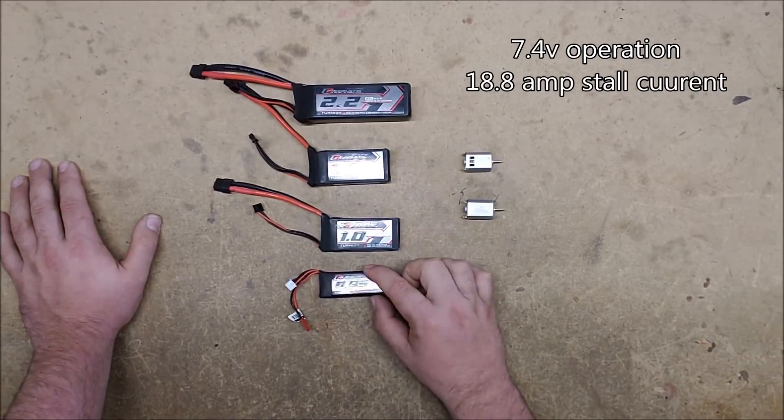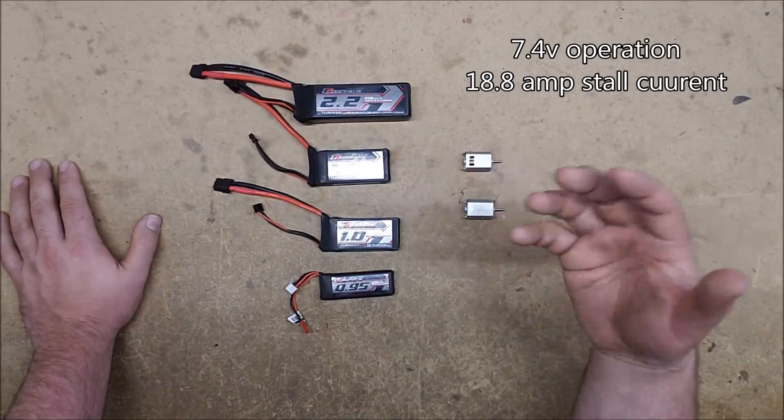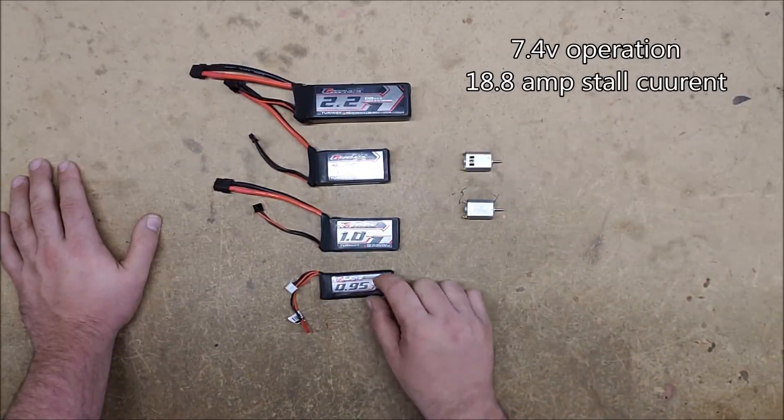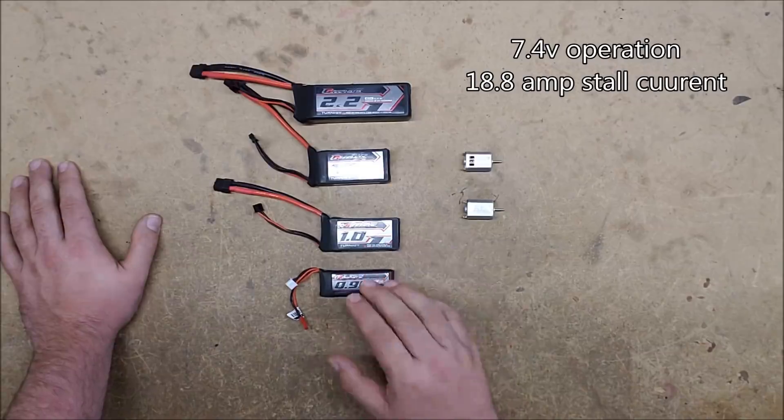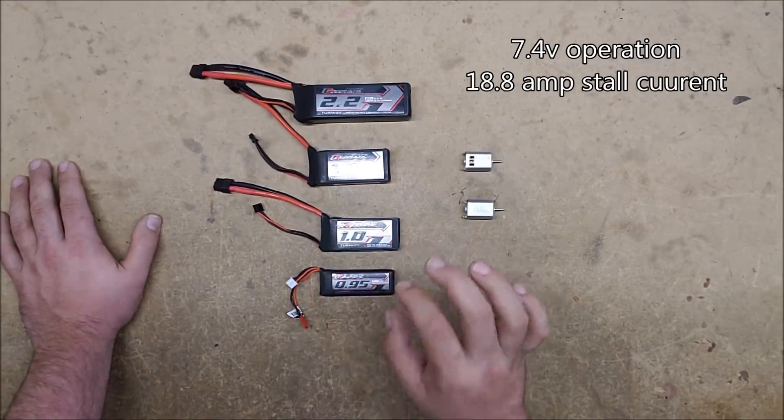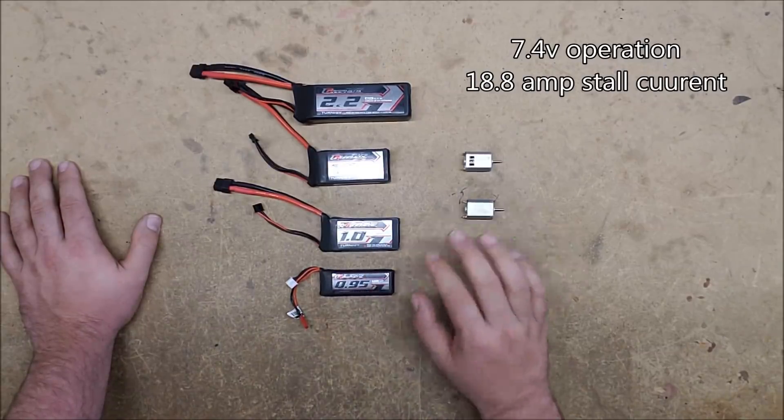But once you get into three, then you're really starting to push the limits on this one. Three of these is coming in at 54, give or take 55, and this is 61. So it's still enough. But at that point, you're starting to push the limits there.